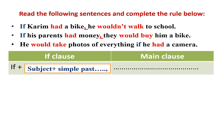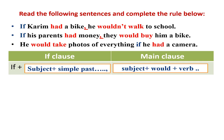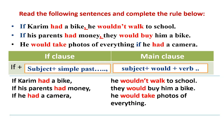So we have: if + subject + simple past. Then in the main clause, we say 'he wouldn't walk to school,' so we have subject + would + verb. In the first sentence it's negative — 'he wouldn't' — so you can see 'would' or 'wouldn't' if it is negative.